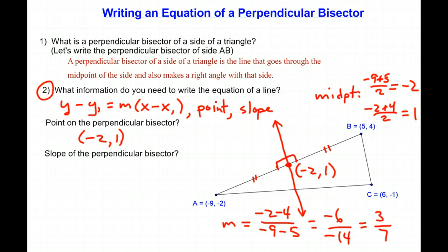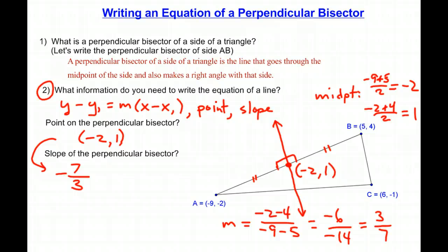So the slope of the perpendicular bisector is going to be the negative reciprocal of 3 sevenths — we flip it over and change the sign — giving us negative 7 thirds. These are the two pieces of information we're going to use to write our equation.